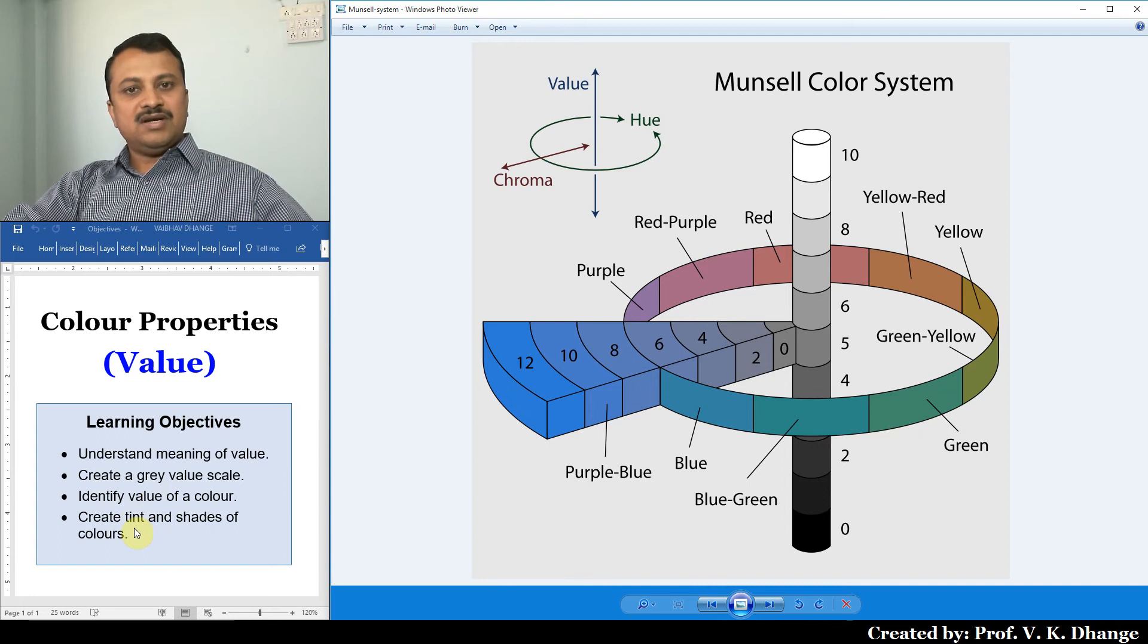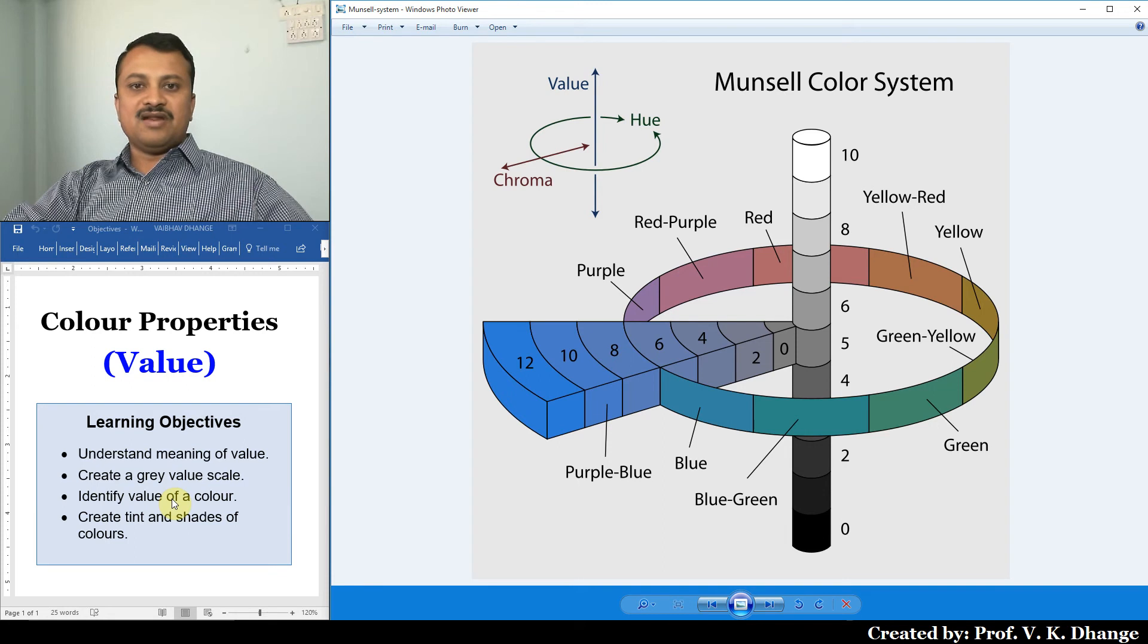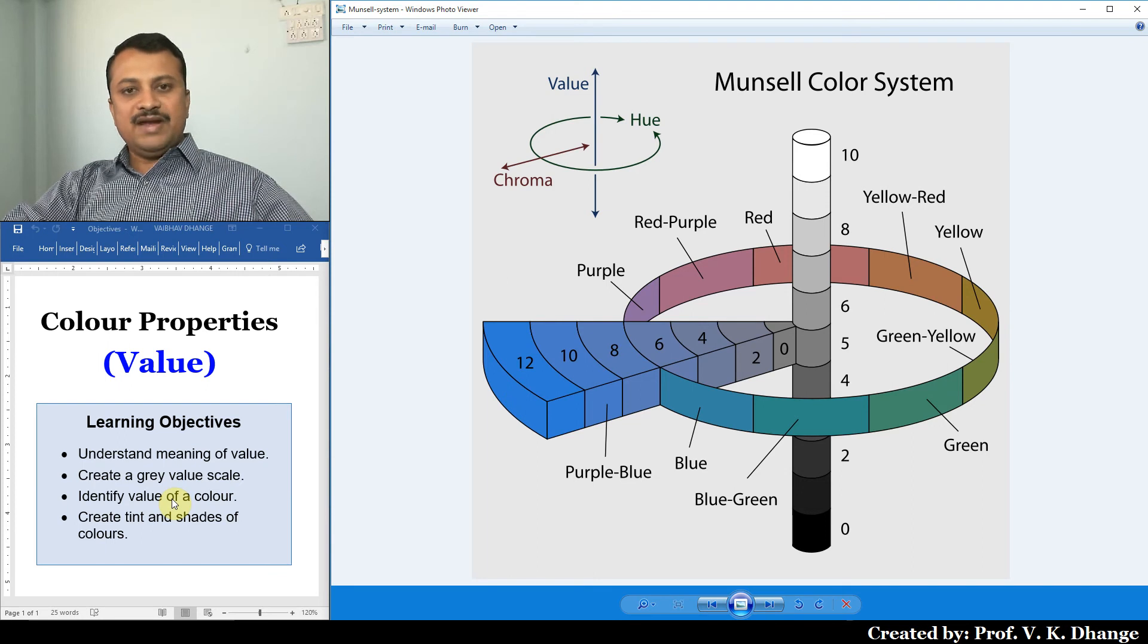So first, let us understand exactly what does it mean by value. Value indicates lightness and darkness of a color. In other words, it also indicates the amount of light that is reflected by the color. Generally, light colors reflect more light compared to dark colors.